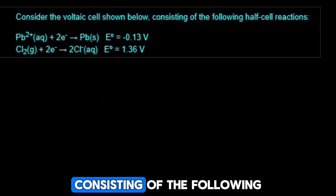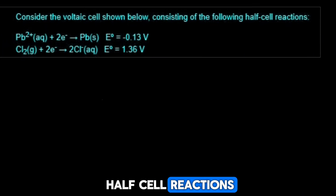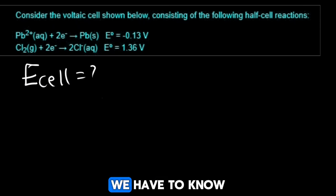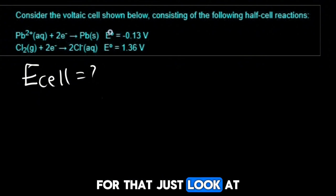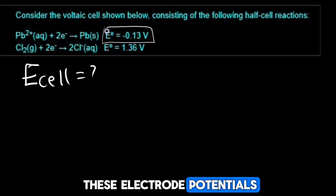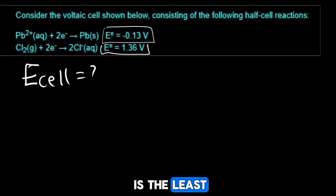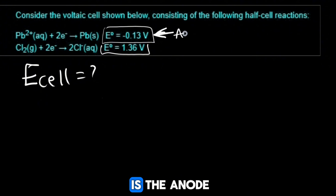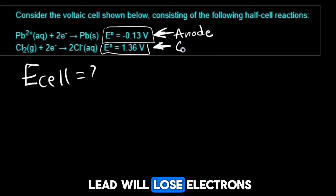How can you find the cell potential? To find the cell potential we have to know which one is anode and which one is the cathode. Just look at these electrode potentials and see which one is the least. We can see that this here is the least. Because this is the least, this means that this is the anode and this Pb or lead will lose electrons.